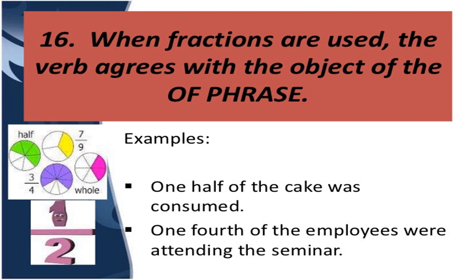Next rule: when fractions are used, the verb agrees with the object of the 'of' phrase. When fractions like one half, one fourth, one fifth, two third are used, the verb agrees with the object used after the 'of' phrase. For example, 'one half of the cake was consumed' — cake is singular, so we use 'was'. Another example: 'one fourth of the employees were attending the seminar' — employees is plural, so we use the plural form of the verb.